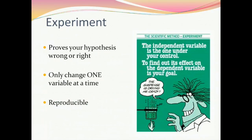The next step in the scientific method is to perform an experiment to test your hypothesis. This typically proves your hypothesis right or wrong. However, sometimes it can be inconclusive. Always remember to only change one variable at a time, and good experiments have reproducible results.